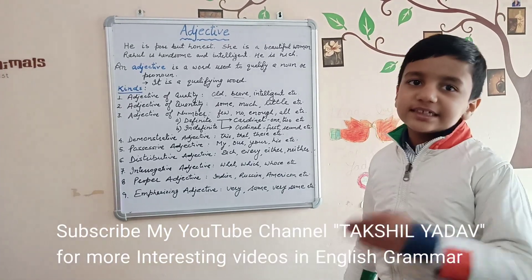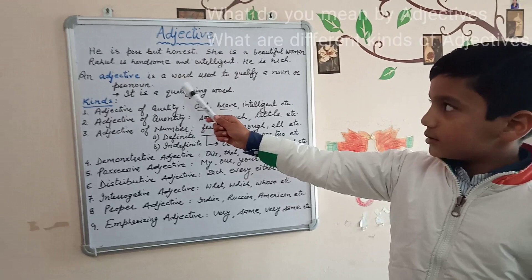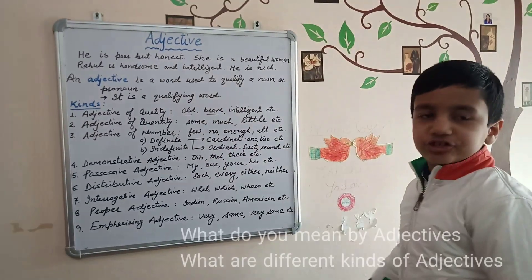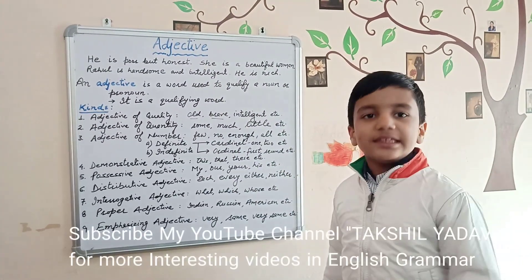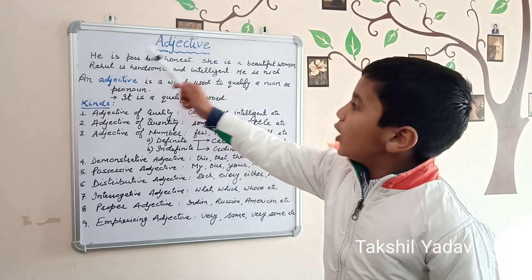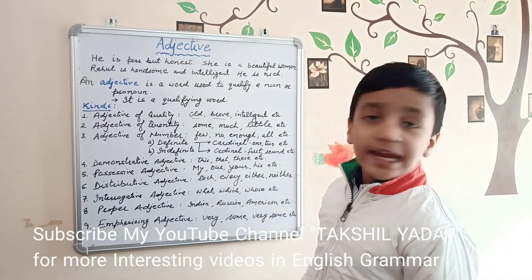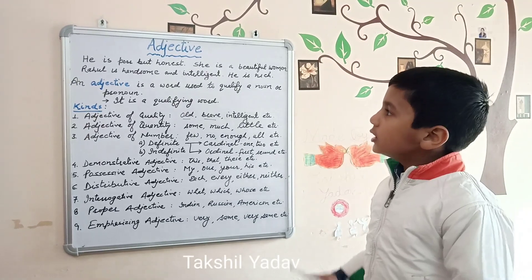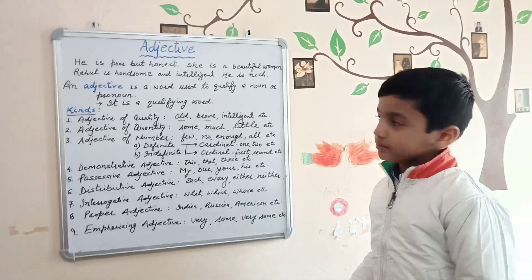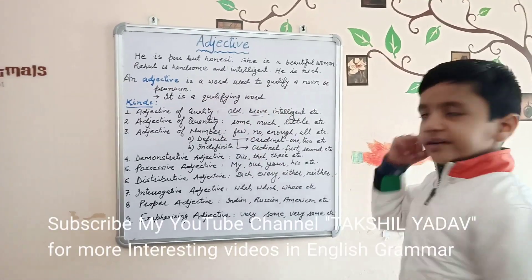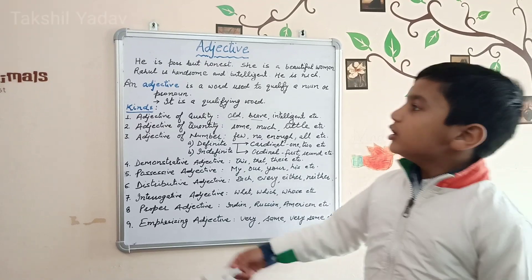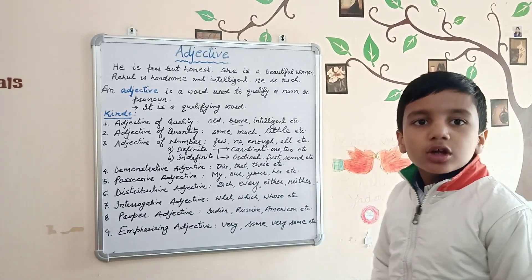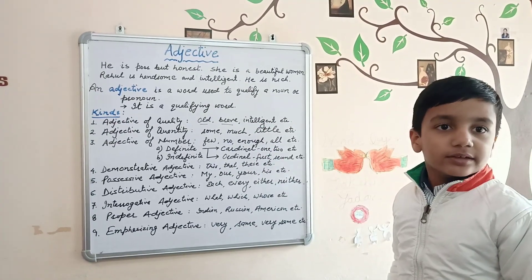The topic of today's lecture is Adjective and different kinds of adjectives. Look at these sentences: He is poor but honest. She is a beautiful woman. Rahul is handsome and intelligent. He is rich. In these sentences, poor and honest qualify and tell us the state of the pronoun he. Beautiful tells us about the pronoun she — it qualifies the pronoun she.